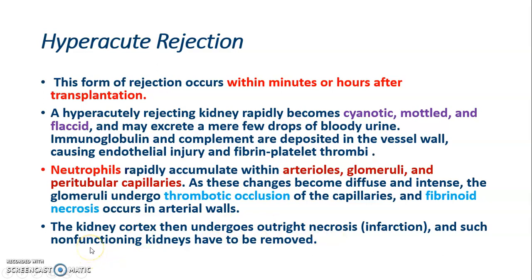The kidney cortex then undergoes necrosis. Such non-functioning kidneys have to be removed. In summary, hyperacute rejection occurs within minutes or hours; the kidney becomes cyanotic and flaccid with neutrophilic infiltrate accumulating within the arterioles, glomeruli, and peritubular capillaries, leading to thrombotic occlusion of the capillaries and necrosis.